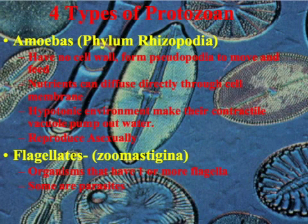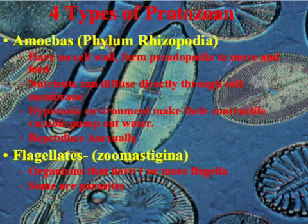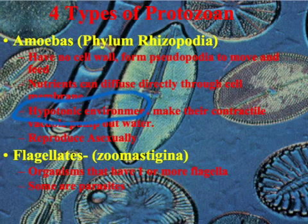Looking more in-depth at each one: the first type is an amoeba. An amoeba uses pseudopodia for movement. They don't have a cell wall, and their nutrients can diffuse directly through the cell membrane. They tend to live in hypotonic environments and use their contractile vacuole to pump out water. The hypotonic environment basically means the cell would otherwise explode, as the concentration is less on the outside, so they pump water out via a contractile vacuole. They reproduce asexually by dividing, and because they have a nucleus, they use mitosis to make a new organism.